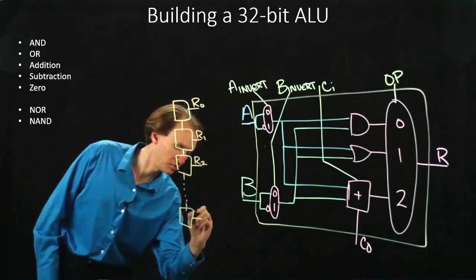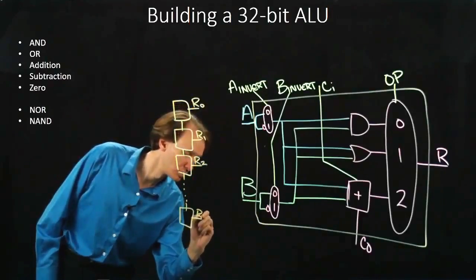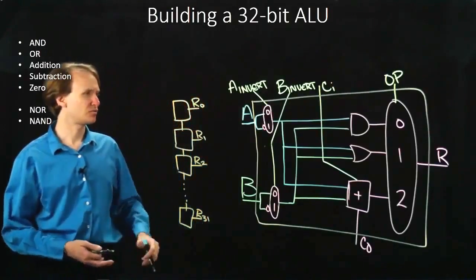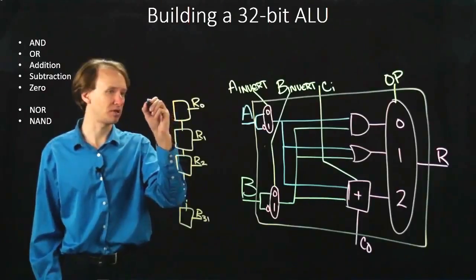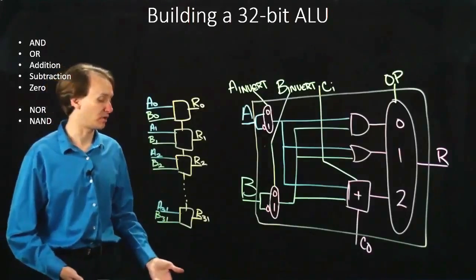So I'd have 32 of them, all the way from 0 to 31, each of which is getting a different pair of input bits for A and B, and producing a corresponding result bit.